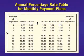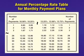Here is the annual percentage rate table for monthly payments. The number of payments is down the left-hand column, and we have the interest rates across the top going from 10% to 13.75%.